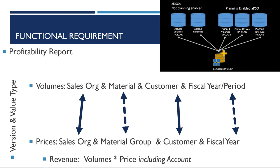Since we want to be able to perform scenario planning, we will use version and value type as well to separate different values. Value types 0 and 10 will hold actual information, while version value types 120, 101, 20, etc. will hold plan values.